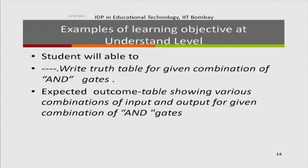Typical action verbs for the understand level are: describe, explain, give example of, select. Recall and understand form the bottom two levels of the Revised Bloom's Taxonomy. An example: student will be able to write the truth table for a given combination of AND gates. This is understand rather than recall because with multiple gates, the student must interpret and do a small calculation combining the truth tables of each gate to find the total output — one step more than recall.